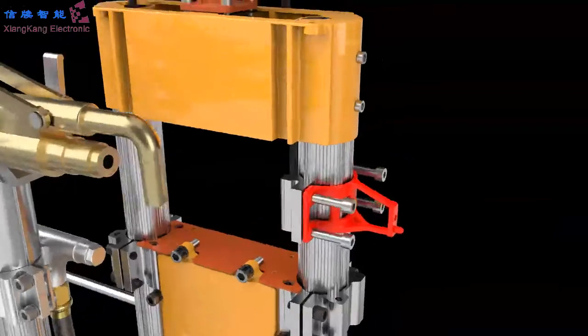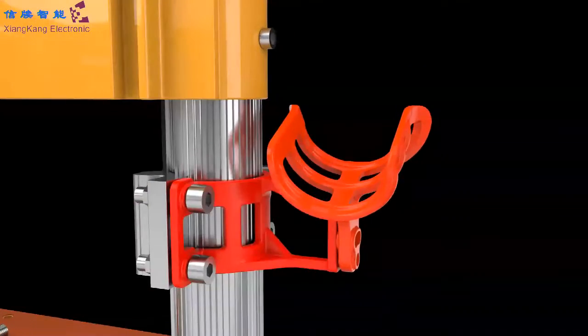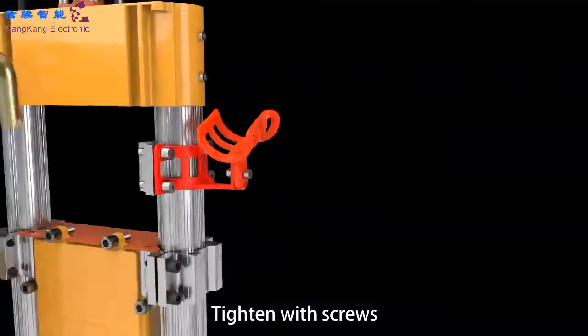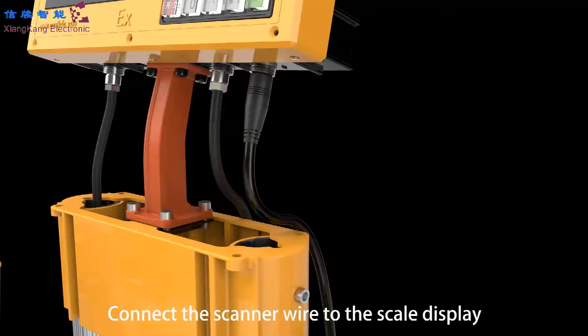Step 8: Install the scanner set. Connect half of the shelf to the hoop. Tighten with screws. Adjust the scanner shelf. Tighten with screws. Place the scanner on the shelf. Connect the scanner wire to the scale display.